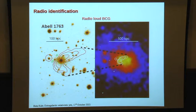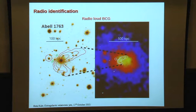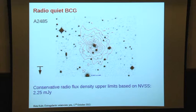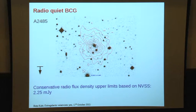In two of our clusters there was extended radio emission — for example, the BCG in Abell 1763, which is nearly at the X-ray peak and has a nice double-lobe structure. There were other cases where there was a BCG at the center but no radio emission, so we placed conservative upper limits based on five sigma of the NVSS VLA Sky Survey, which is about 2.25 millijasnky.